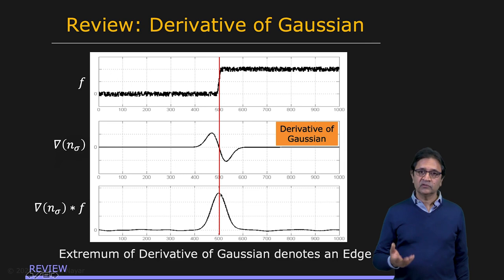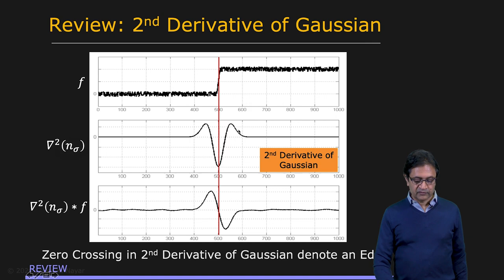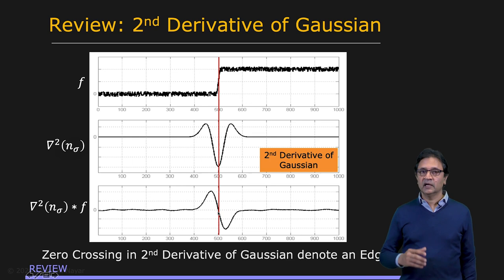We can also find the edge by using the second derivative of the image. Again, instead of finding the second derivative of the image, we find the second derivative of the Gaussian, which looks like this. It's referred to as the inverted Mexican hat operator. Apply this operator to the image, and you get a clear zero crossing at the location of the edge. So these are some of the tools that we'll be using for developing our blob detector.